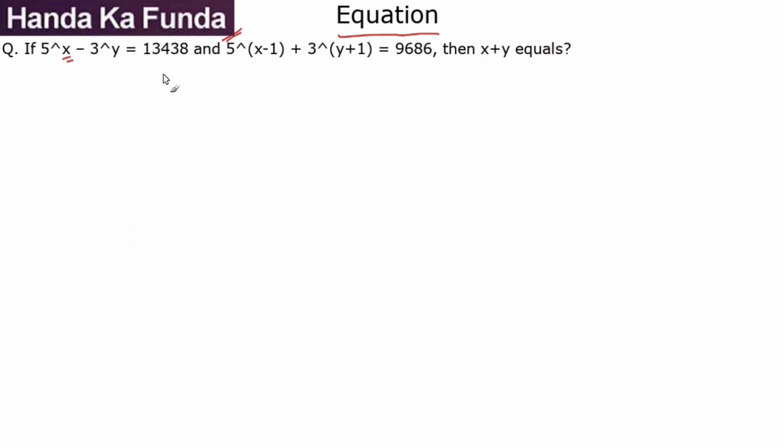So what are some techniques that we can use? I have 5 to the power x minus 3 to the power y, and I have a five-digit number. When some powers of 5 and some powers of 3 are added, I have a number which is closer to 10,000. Very clearly, we're not dealing with 5 square or 5 cube or 3 cube—we are dealing with bigger powers.